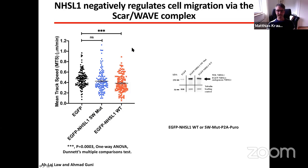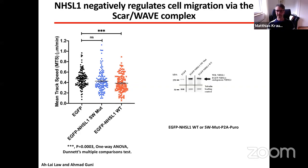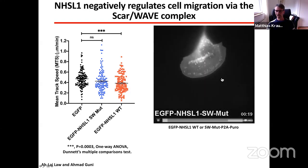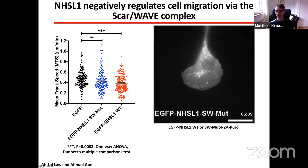When we over-expressed these in B16F1 cells and plated them on fibronectin, we observed a moderate but significant reduction in cell migration speeds only in cells over-expressing wild-type NHS-like 1, suggesting NHS-like 1 negatively regulates migration via the SCAR/WAVE complex. Importantly, the NHS-like 1 SCAR/WAVE binding mutant localized normally — like wild-type — to the very edge of the lamellipodium and to vesicles, suggesting the phenotype is not due to mislocalization. This also suggests that NHS-like 1 functions upstream of the SCAR/WAVE complex.